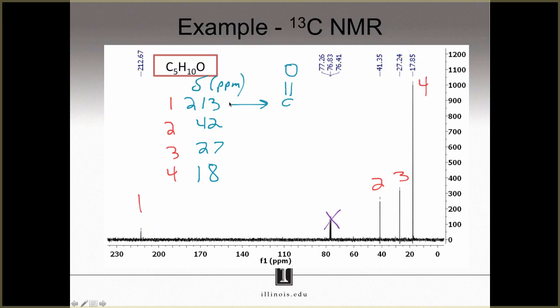What about these other chemical shifts? At 42, 27, and 18 ppm — those are pretty far upfield, meaning we probably don't have any strong electron withdrawing groups in the molecule. That being said, signals 2 and 3 are slightly deshielded. The carbonyl could be deshielding carbons 2 and 3, which tells me they are probably close to the carbonyl, maybe even directly attached to it. We've now finished analyzing the carbon-13 spectrum.